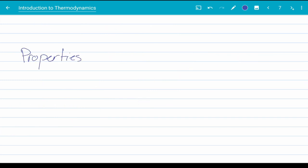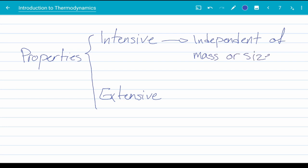Properties are divided into two main groups. Intensive properties and extensive ones. Intensive properties are independent of the mass or size of the system, whereas extensive properties are actually dependent on the size and mass.